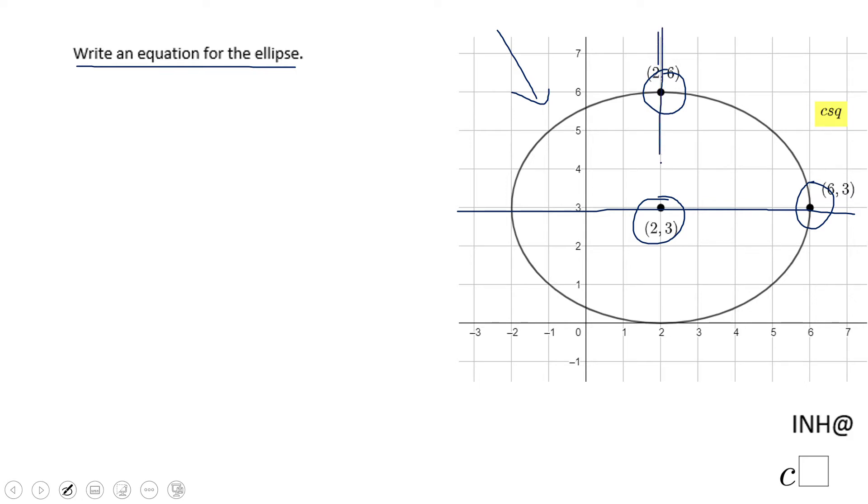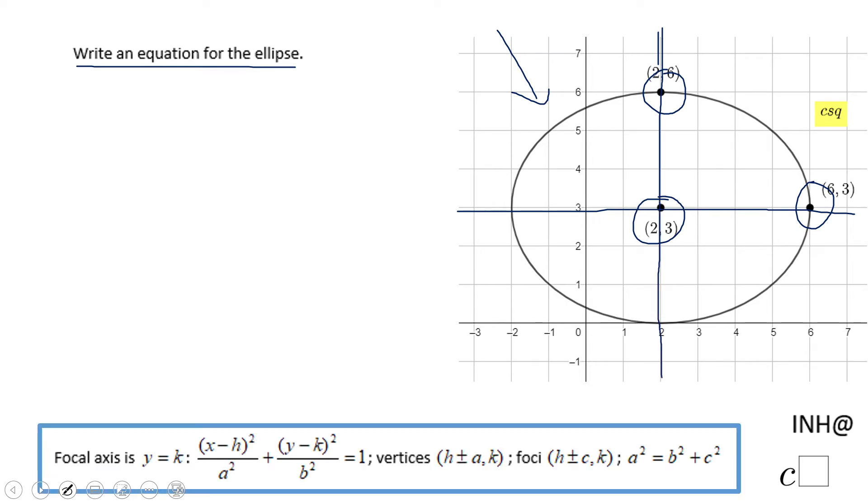And this is on the minor axis. So first of all, let's take a look at what equation we're going to use. We're going to use this one, so let me copy: x minus h squared over a squared plus y minus k squared over b squared equals one.